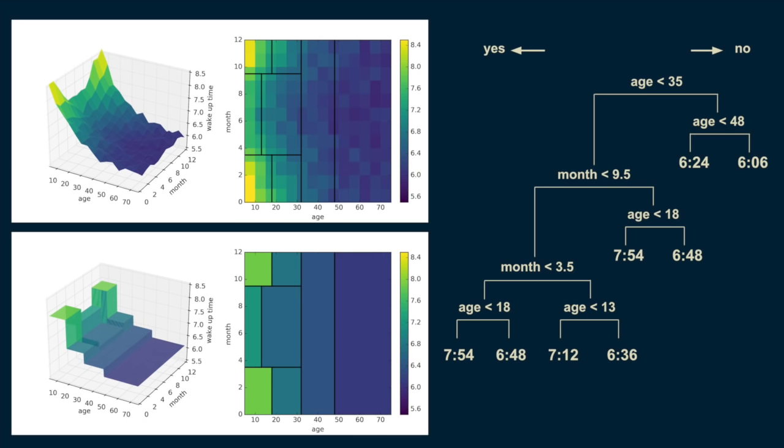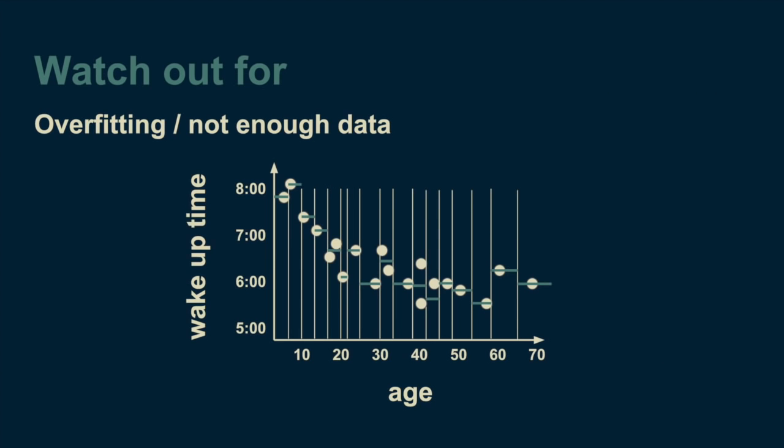The power of decision trees is not without pitfalls. An important one to watch out for is overfitting. Returning to our example of a single variable regression tree, age versus wake-up time. We continue to make cuts on the age axis until there were only one or two data points in each bucket. When we get to this point, the decision tree explains and fits the data very well. It fits too well.